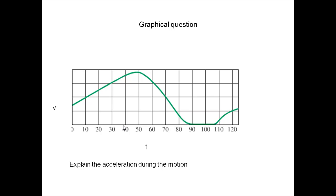Now, from 40 to 50 seconds, the slope of the graph is decreasing. That means the acceleration value is decreasing. The body is still accelerating, but the acceleration is getting decreased. At this point, it becomes zero. Acceleration has become 0.